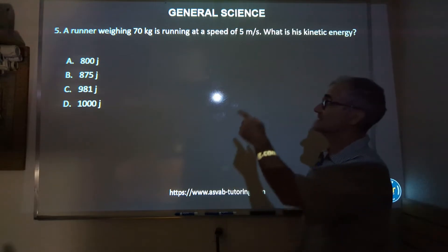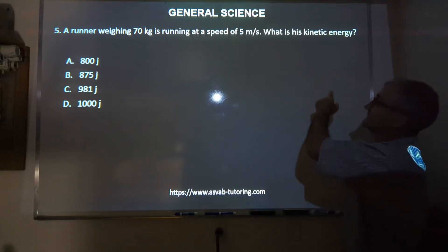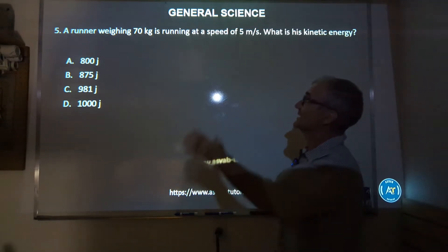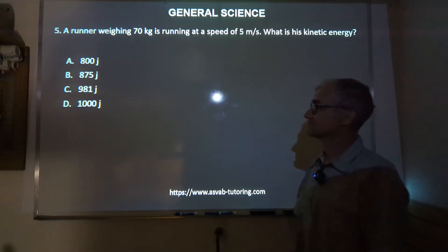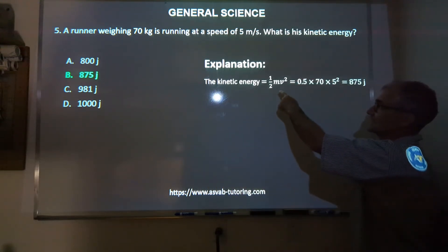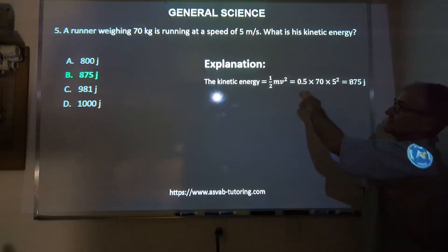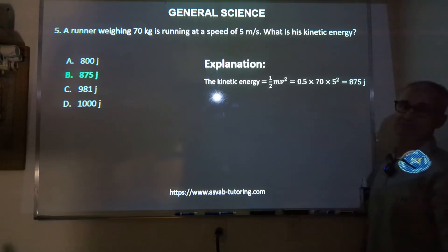Number five: a runner weighing 70 kilograms is running at a speed of five meters per second. What is his kinetic energy? 800 joules, 875, 981, or 1,000 joules? Correct answer is B, 875 joules. Kinetic energy is one-half mass times velocity squared, which is 0.5 times 70 kilograms times five squared — that's 25 times 70 times a half — which gives 875 joules.